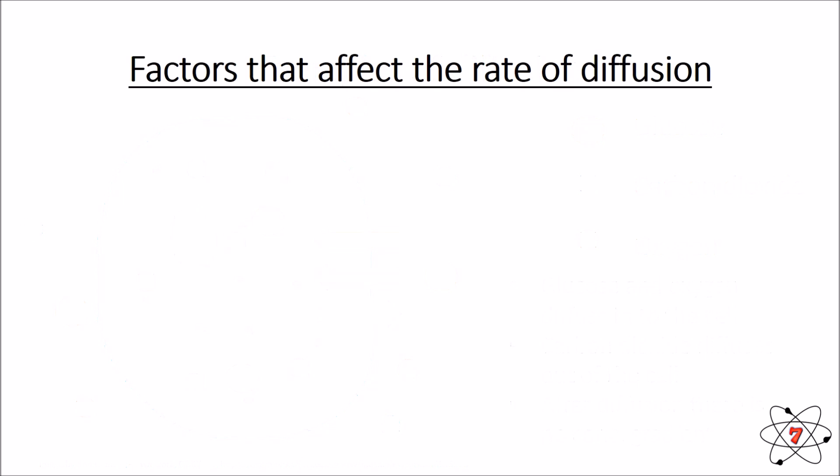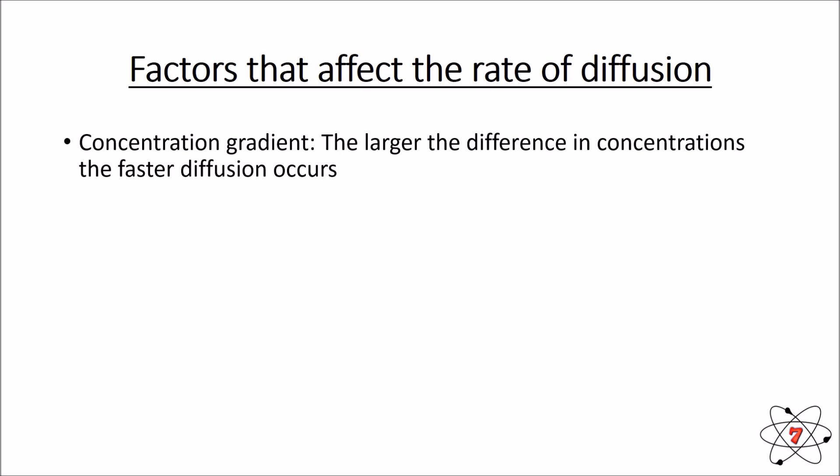Diffusion is affected by a number of factors. The first and most obvious is the concentration gradient. The bigger the difference between the two concentrations, the faster diffusion occurs. If you have one very high concentration and one very low concentration, diffusion will happen quickly. If the two concentrations are fairly even, diffusion will happen much slower.